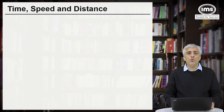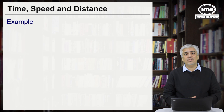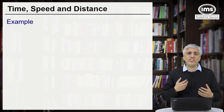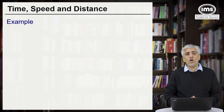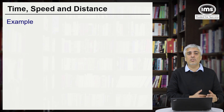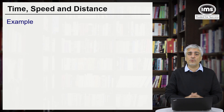Hi everyone. Today we are going to take examples around trains — trains moving in the same direction, opposite direction, one train crossing another, and a train crossing a bridge. These are very common questions asked in all entrance exams. Before you proceed, I would recommend you watch our video on relative speed. Only once you have seen that well will you understand this concept also well.